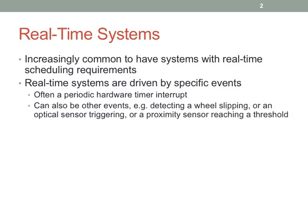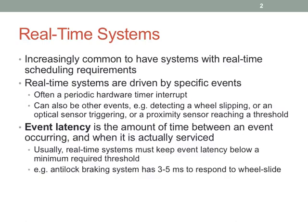You buy a new car and it has anti-lock braking — that's got a real-time system built into it to manage the braking of the wheels. New Subarus have cameras that watch the road with real-time scheduling requirements. These systems are typically driven by events — maybe a timer. On an assembly line, switches trigger software that needs to run when a particular switch fires so the system can do the appropriate thing.